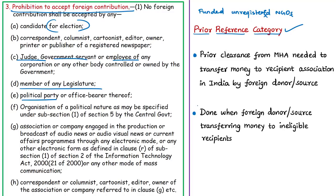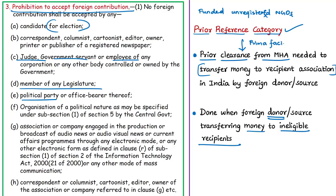When a foreign source or donor wants to transfer money to a recipient association in India, if placed under the prior reference category, the foreign donor must obtain prior clearance from the Ministry of Home Affairs. The government typically places a donor under this watch list when it receives information that a particular foreign donor is transferring money to ineligible recipients. Once preliminary investigation establishes such allegations, action is initiated against recipients under FCRA provisions, and the foreign donor is also placed under the prior reference category. This is not a permanent penalty — after due consideration and based on specific reports, an organization can be removed.